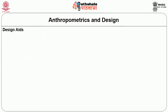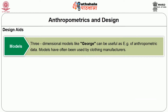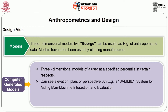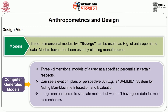Three-dimensional models like the George model can be useful as examples of anthropometric data, and have often been used by clothing manufacturers. Computer-generated models provide three-dimensional models of a user at a specified percentile, showing elevation plans and perspective plans. An example is the SAMI system for aiding manufacturing man-machine interaction, with evaluation images that can be altered by simulating motion. However, a problem is that good data may not be available for most biomechanics activities.